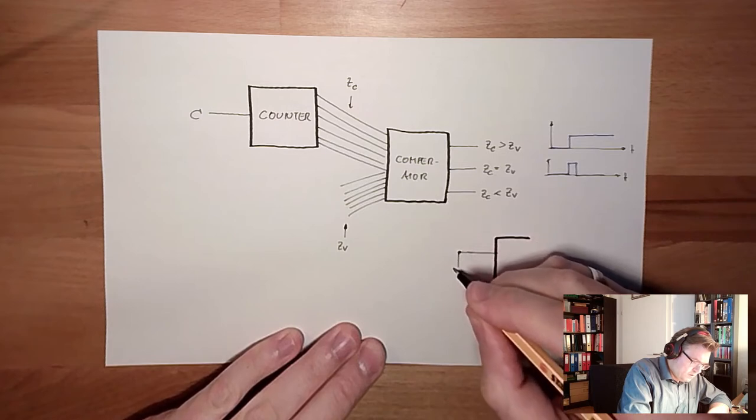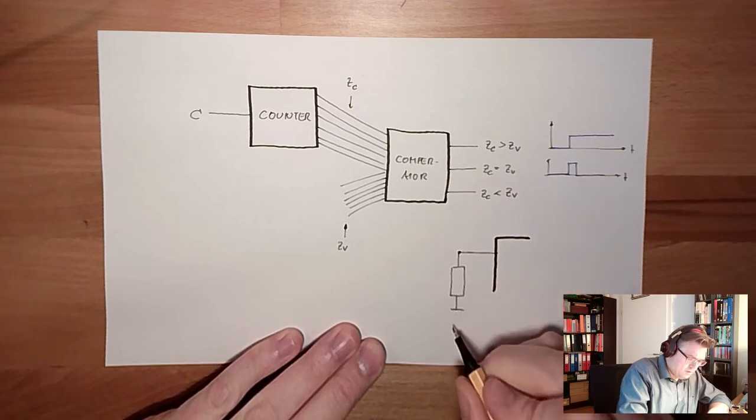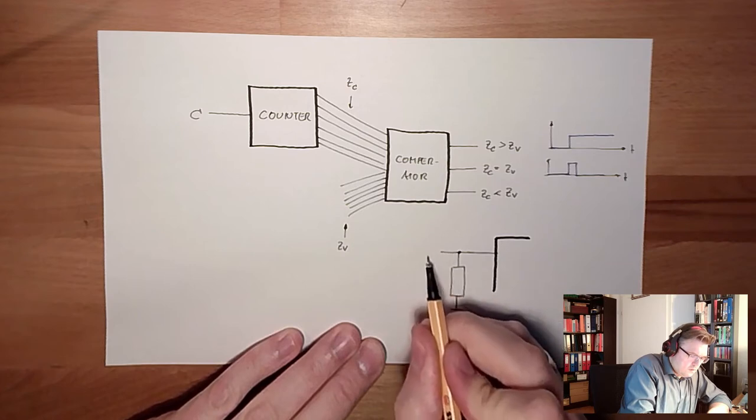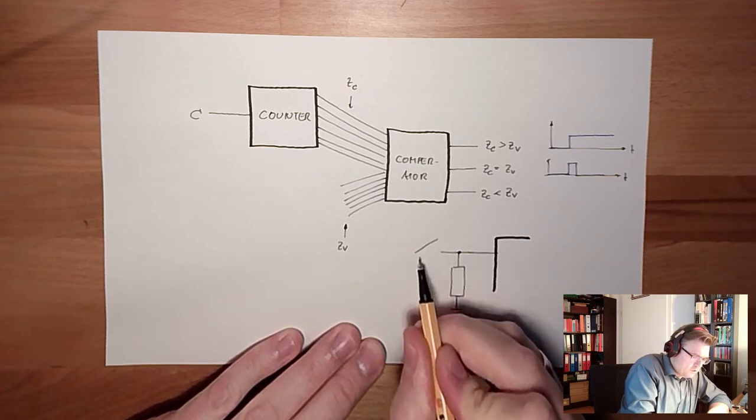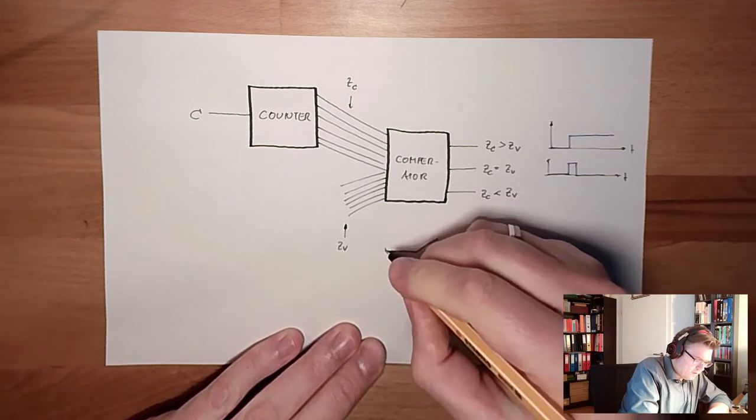I'm using here a so-called pull down resistor in my example. This is connected to 0V. And here I have a switch, a contact, and this is connected to 5V.